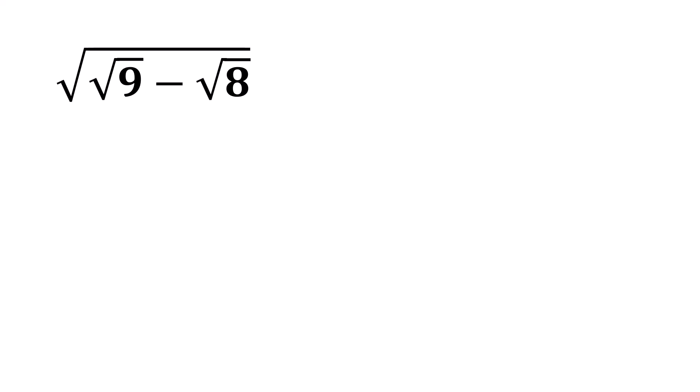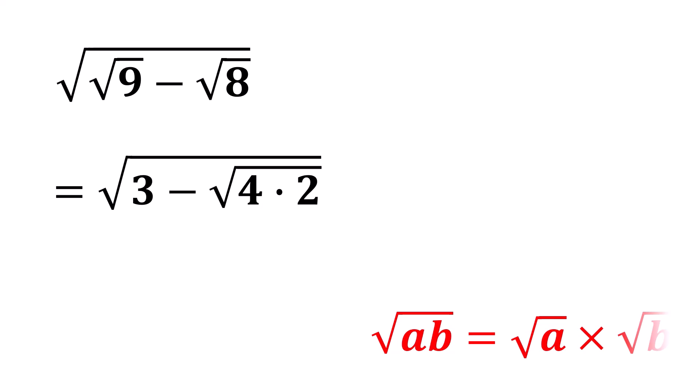So, we can rewrite the expression as the square root of 3 minus the square root of 4 times 2. Now, using the law of exponents that says the square root of AB equals the square root of A times the square root of B,